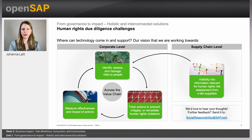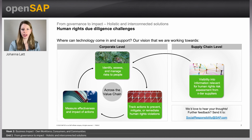To summarize, we see four big open challenges in human rights due diligence that IT will need to enable and support — three on corporate level and one on supply chain level. The three corporate-level challenges form an iterative process: identifying, assessing, and managing risks to people; tracking the resulting actions; and measuring effectiveness and impact, feeding back into risk assessment. On supply chain level, gaining visibility into N-tier supplier information is a big challenge, and once obtained, that information feeds into corporate-level risk assessment.